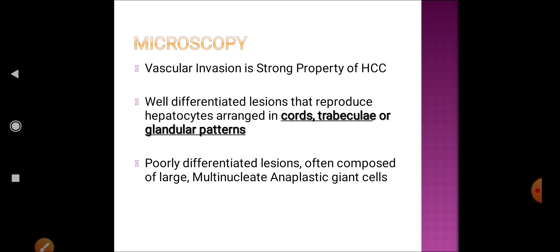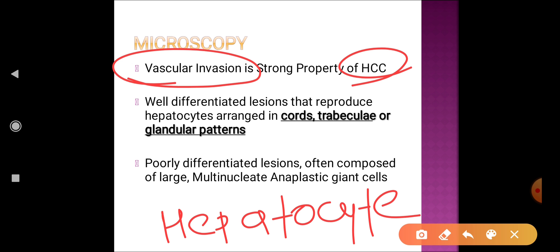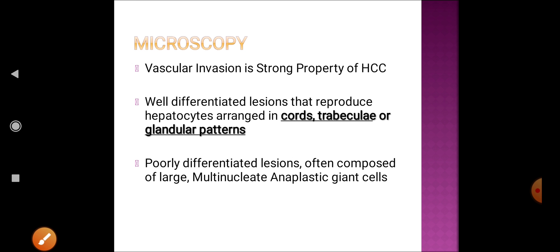On biopsy and microscopy, vascular invasion of malignant cells is a particular property of hepatocellular carcinoma — the cells penetrate vascular channels. There will be proliferation of hepatocytes arranged in different fashions. The most common pattern is trabecular. Other patterns include glandular, cord arrangement, or solid nests.